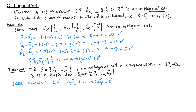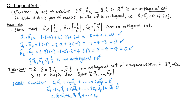We take the dot product of both sides with ui for some i between 1 and p. On the left we get c1(ui·u1) + c2(ui·u2) + ... + cp(ui·up), and on the right ui·0 = 0. Since the vectors are orthogonal, ui·uj = 0 whenever i ≠ j, so most terms on the left vanish, and only ci times ui·ui remains.